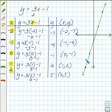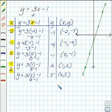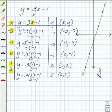Now we decide if this is a function or not. Remember, we can tell one of two ways. You can look and see if you've got more than one value of y for each x — which we don't. And then we can try the vertical line test: draw vertical lines throughout and make sure it only crosses in one place. Because it does, we say yes, this is a function.